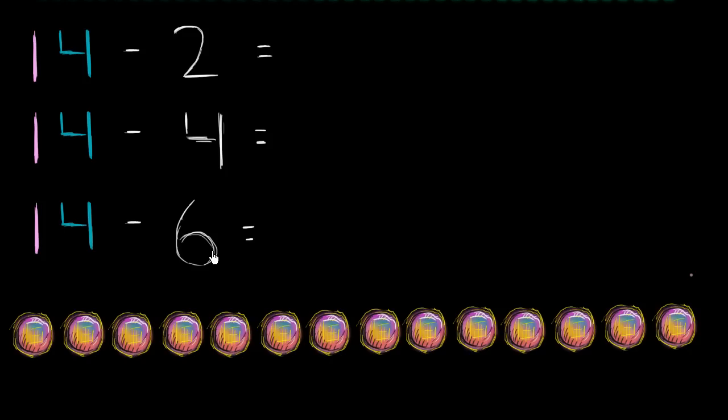So I'm assuming you've given it a try. Now let's think about it. The number 14, just by how it's written, we know that it's going to be one group of 10—that's what this 1 tells us—plus another four ones. So let's verify that we have 14 objects down here.